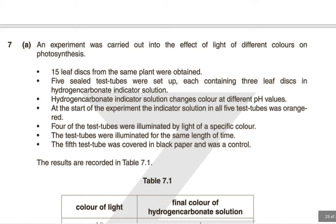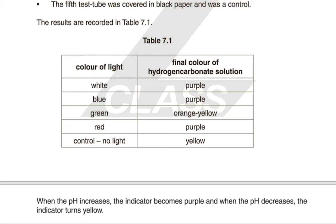An experiment investigated the effect of light of different colours on photosynthesis. 15 leaf discs from the same plant were placed in five sealed test tubes each containing hydrogen carbonate indicator solution, which changes colour at different pH values. At the start, all solutions were orange-red. Four test tubes were illuminated by light of a specific colour for the same length of time; a fifth was covered in black as the control. White and blue light made the indicator change to purple; green had essentially no effect and remained orange-yellow; red changed to purple; and no light remained yellow. When pH increases the indicator becomes purple, and when pH decreases it turns yellow.